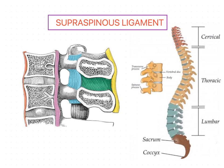Dear students and viewers, welcome back. In the previous session we discussed the posterior longitudinal ligament. In this session we are going to discuss the supraspinous ligament, which is also a part of the intersegmental system of the ligamentous system of the spine.